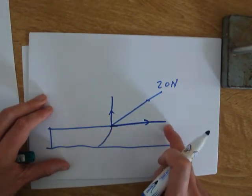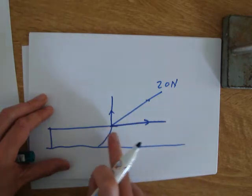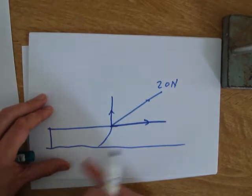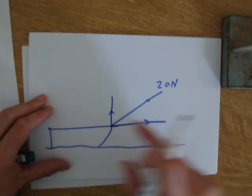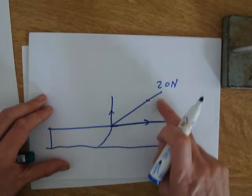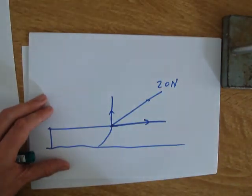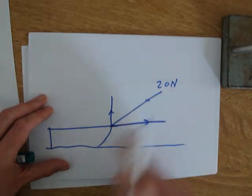There's a component pulling this sledge forward and a component pulling the sledge upwards. These two components add up to create this 20 Newton force when we treat them as vectors. So if we want to find the magnitude of these two components, we'll need an angle.